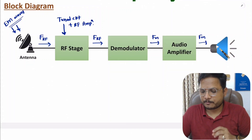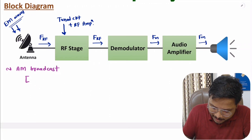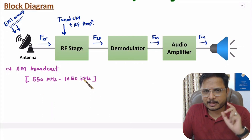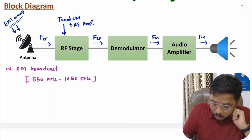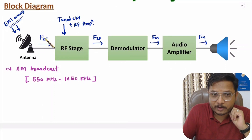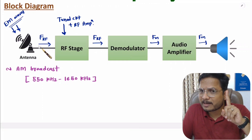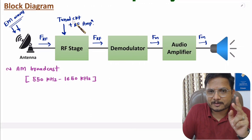Our application here is based on voice communication, that's why I have placed a loudspeaker. Now let me consider a practical application of AM broadcast. In AM broadcast, the frequency range is from 550 kilohertz to 1650 kilohertz. In this frequency range there are many channels, and the antenna receives all of them.